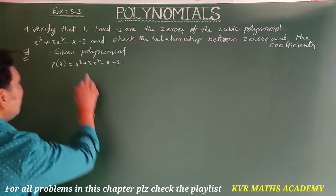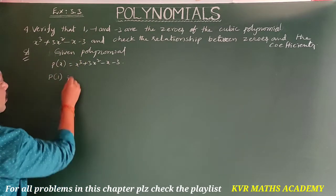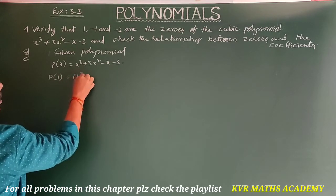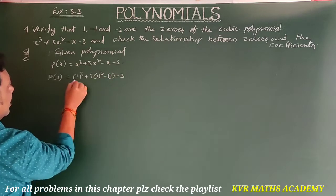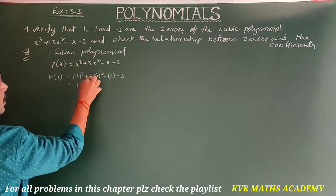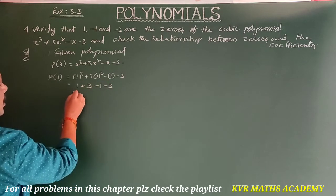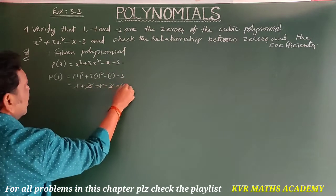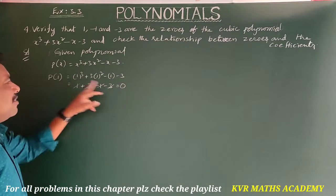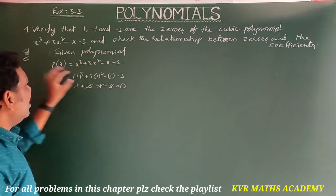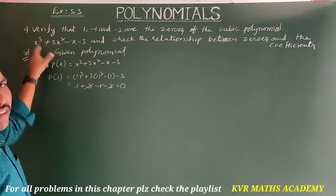First, P(1) = 1³ + 3(1²) - 1 - 3 = 1 + 3 - 1 - 3. Here +1 and -1 cancel, and +3 and -3 cancel, giving P(1) = 0. So 1 is a zero of the given polynomial.